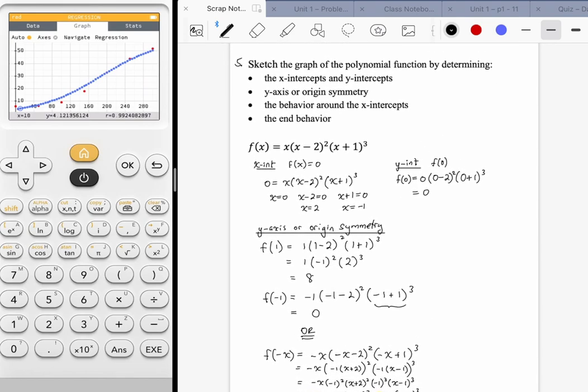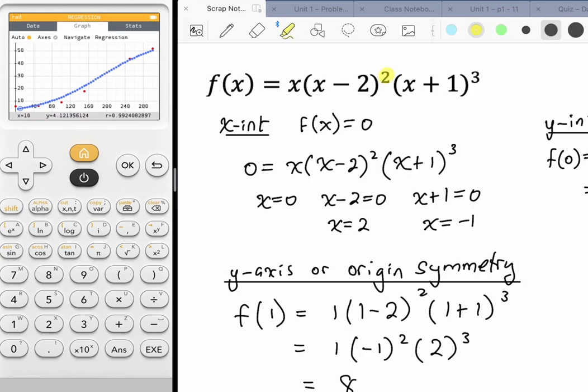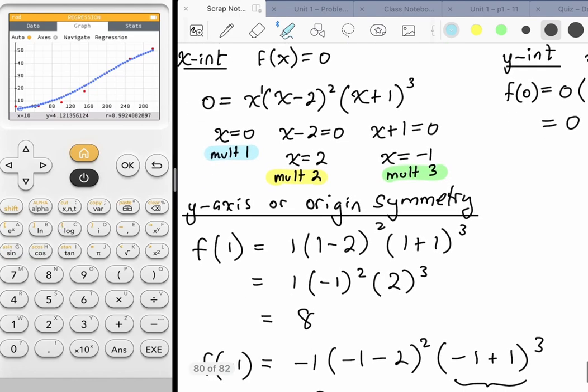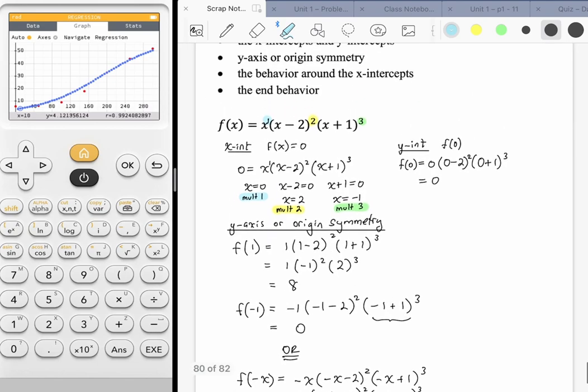We've addressed intercepts, symmetry, behavior around the x-intercepts. Around the (x - 2) factor, we have the power of 2, so that's multiplicity of 2. For the (x + 1) cubed, that's a multiplicity of 3 around x equals negative 1. And then the x itself just has the power of 1, multiplicity of 1. So it's going to behave like a line around x equals 0, like a parabola around x equals 2, and like a cubic around x equals negative 1.